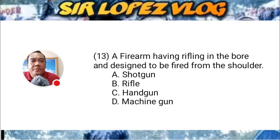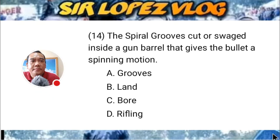Question number fourteen: The spiral grooves cut or swaged inside a gun barrel that gives the bullet a spinning motion. A) grooves, B) lands, C) bore, or D) rifling?